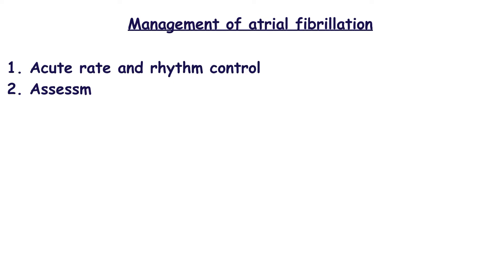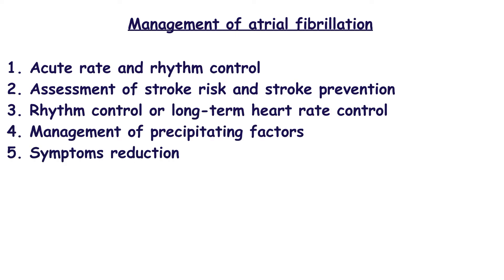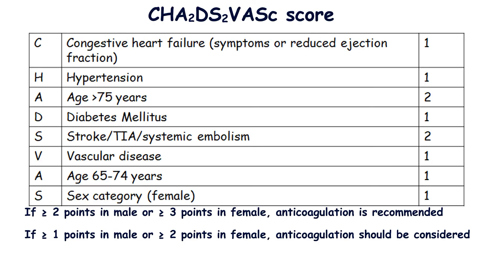Management of atrial fibrillation involves five tasks: acute rate and rhythm control, assessment of stroke risk and stroke prevention, rhythm control or long-term heart rate control, management of precipitating factors, and symptoms reduction. If stroke risk according to CHA₂DS₂-VASc score is high, oral anticoagulation should be started — either vitamin K antagonist (VKA) or non-vitamin K antagonist oral anticoagulants (NOAC).